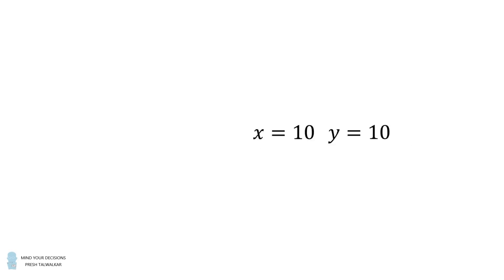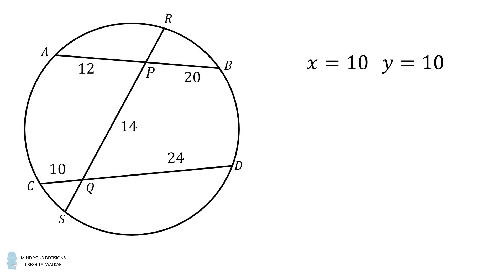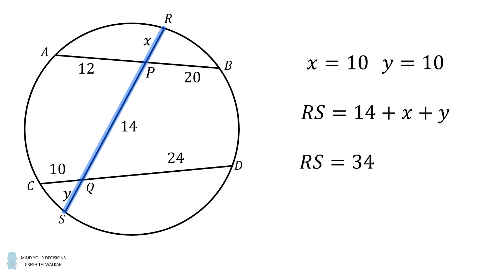Finally, we go back to our diagram. RS equals 14 plus X plus Y. We have X equals 10 and Y equals 10. Therefore, RS equals 14 plus 10 plus 10, which means RS equals 34. And that's the answer.